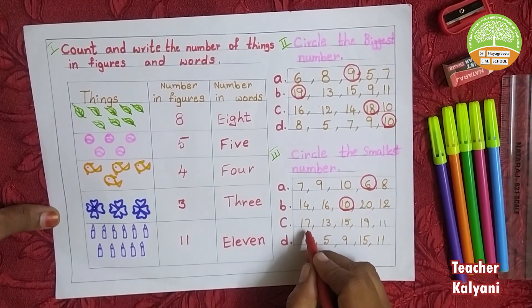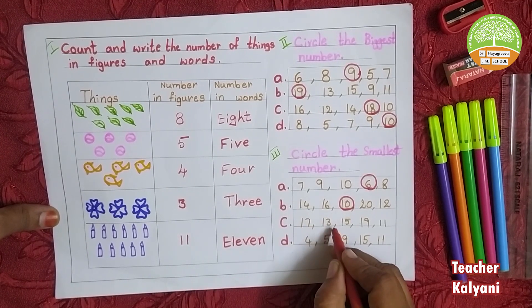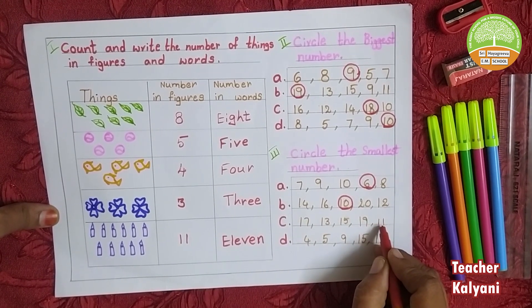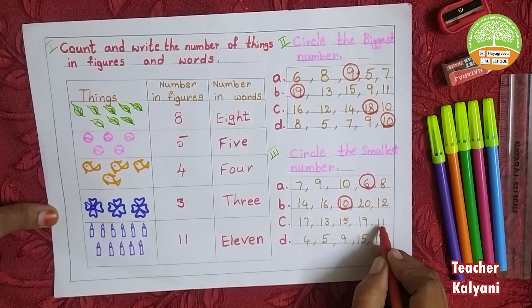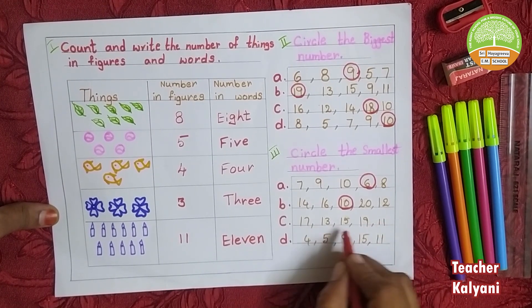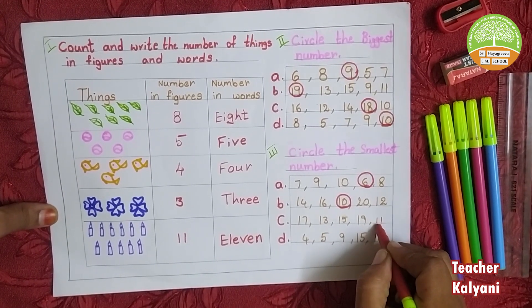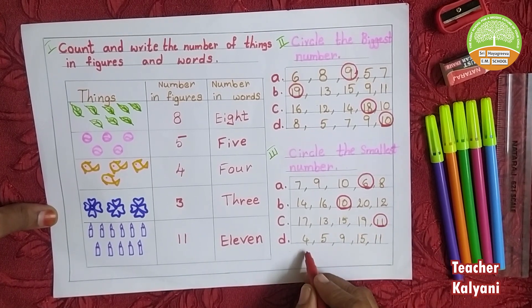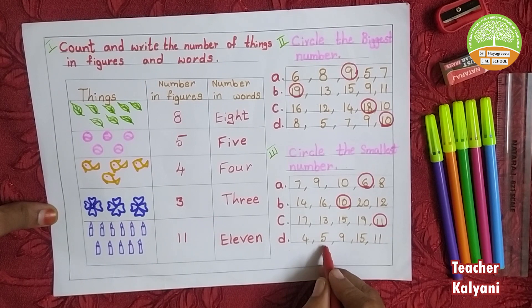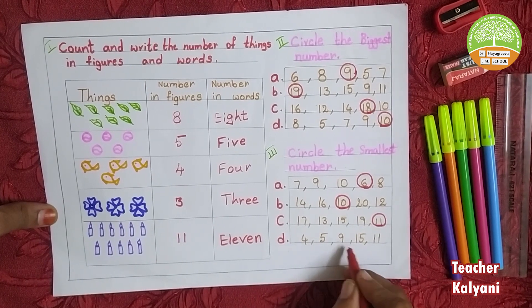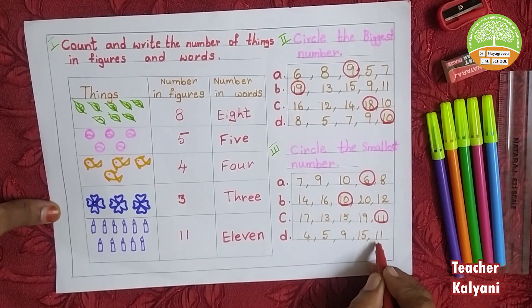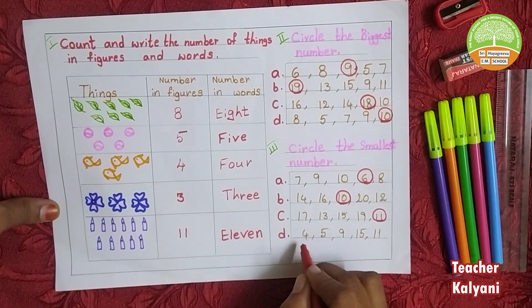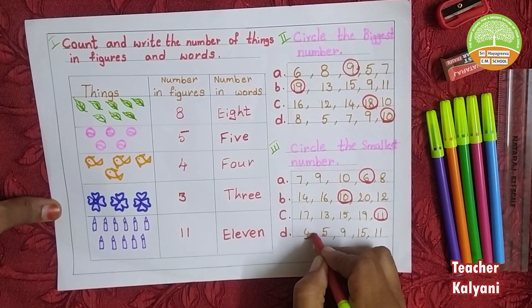Next one: 17, 13, 15, 19, 11. Which is the smallest number in this box? 11. Next one: 4, 5, 9, 15, 11. Which is the smallest number in this box? 4.